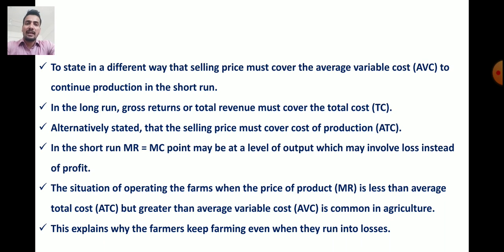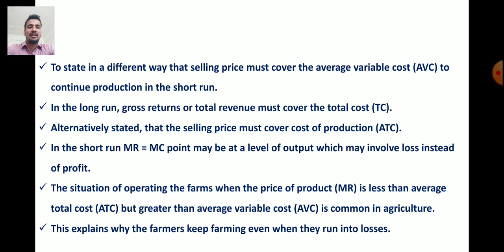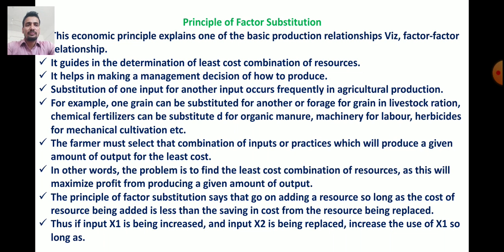The situation of operating the firm when the price of the product — that is, marginal revenue — is less than average total cost but greater than average variable cost is common in agriculture. This explains why farmers keep farming even when they run into losses: they receive marginal returns greater than average variable cost, so continuing production minimizes their losses.